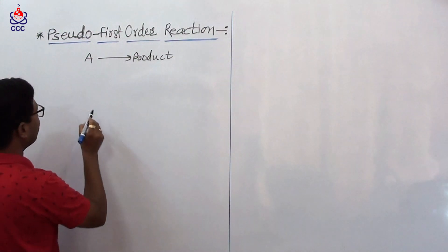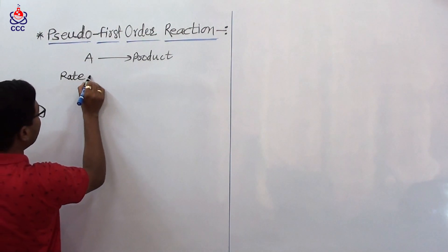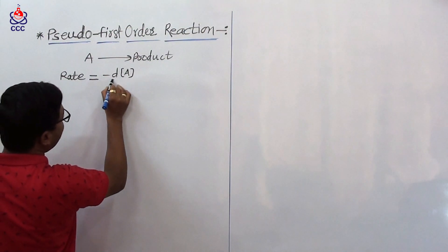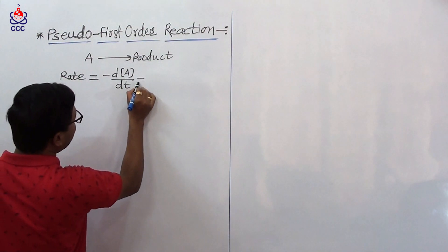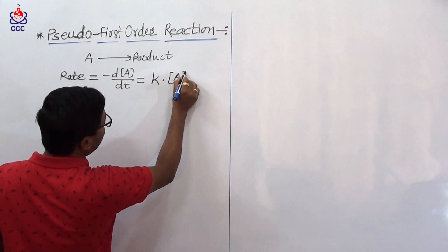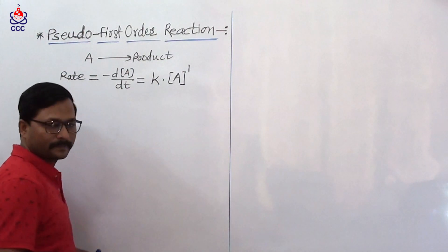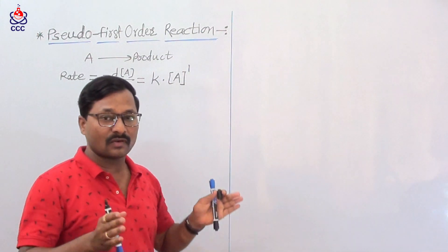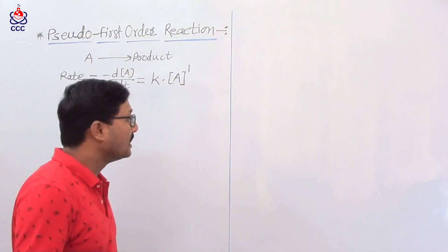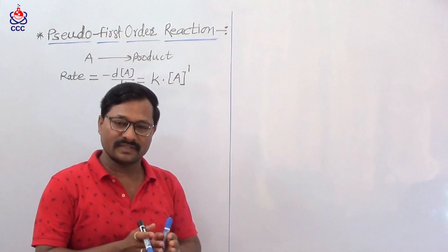If this is a first-order reaction, then the differential rate law for this reaction is given as: rate is equal to minus dA by dt, which is equal to rate constant K into concentration of reactant A raised to 1. It is concentration of reactant A to power 1 because this reaction is a first-order reaction.